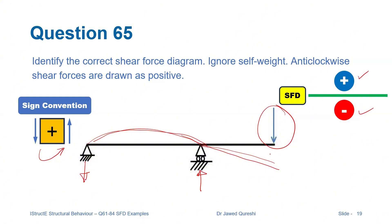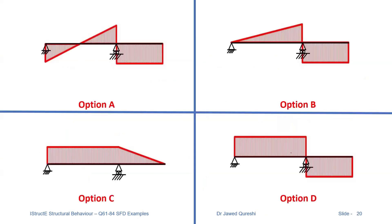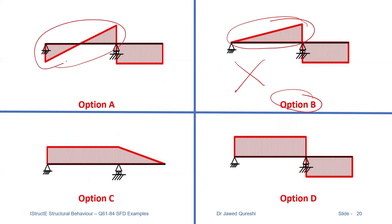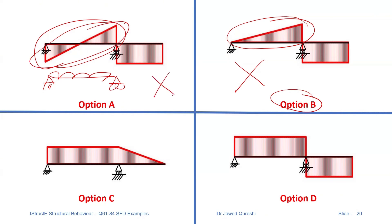I'll first solve this by process of elimination, then use numerical values. Option B has an inclined line, which only occurs with distributed loads — since there is no distributed load, I can discard it. Option A also has an inclined line, suggesting a distributed load, so I discard it too. Option C similarly has an inclined line and can be discarded, leaving only option D.